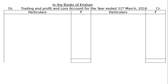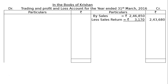The debit and credit sides will be there. On the trading account credit side, write sales Rs. 2,46,850, less sales return Rs. 3,170. After deducting this, write in the final column Rs. 2,43,680. Then by closing stock Rs. 29,638 — this is an adjustment.